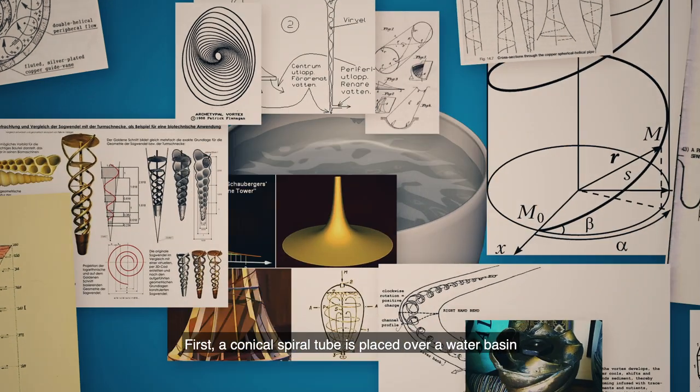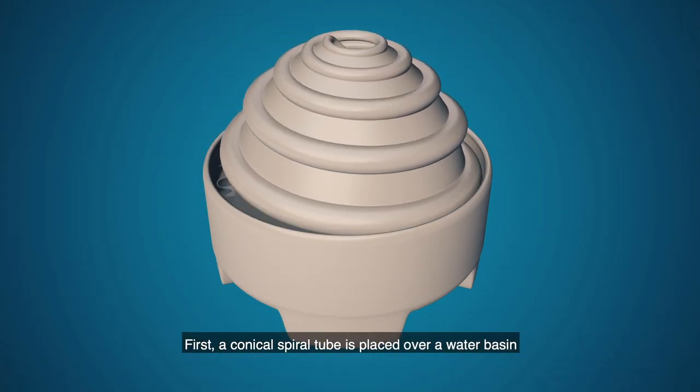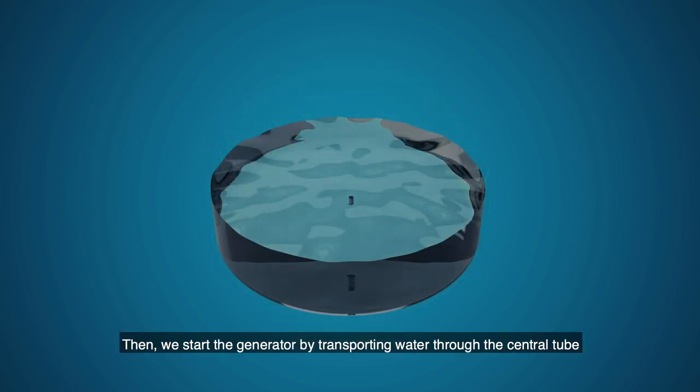First, a conical spiral tube is placed over a water basin. Then, we start the generator by transporting water through the central tube.